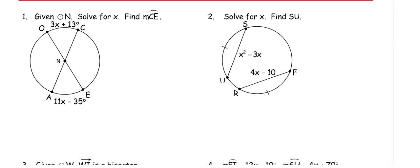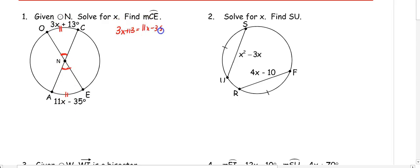In number one, given circle O, we want to solve for X. Looking at this, we see crossing lines which create vertical angles. Vertical angles are congruent, which means those arcs are congruent. So we have 3X plus 13 equals 11X minus 35. Solving for X: 8X equals 48, divide by 8 on both sides, so X is 6.